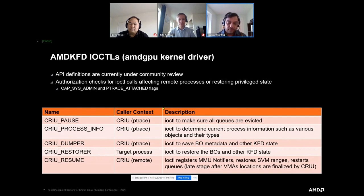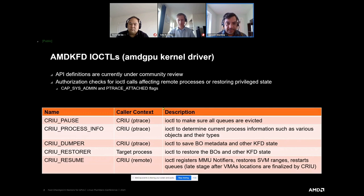For the pause ioctl: when we start the checkpoint operation, we want to ensure that if there are user-mode queues running on the GPU, they are evicted — we need to make sure the state is consistent between checkpoint and restore. So we ensure that any running activity on the GPU is paused or quiesced while the checkpoint operation is ongoing. The pause ioctl can also unpause — it can do both stop and resume. Process_info is a helper ioctl that runs before the actual dumper ioctl.